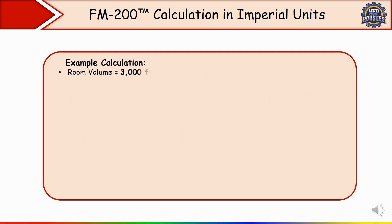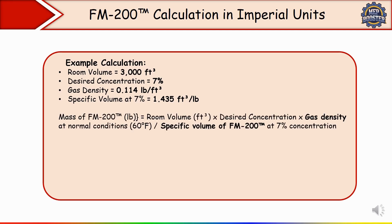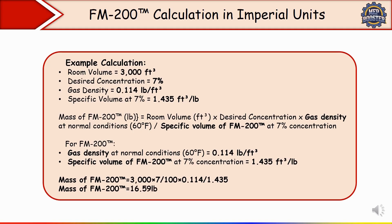Let's take one example. Suppose the room volume is 3,000 cubic feet, desired concentration is 7% (for electrical/electronic rooms), FM 200 gas density is 0.114 pounds per cubic foot, and specific volume is 1.435 cubic feet per pound. Using the formula — room volume × desired concentration × gas density ÷ specific volume — when you substitute these values, you get the mass of FM 200 equal to 16.59 pounds.